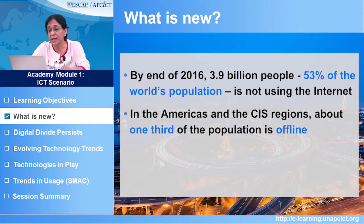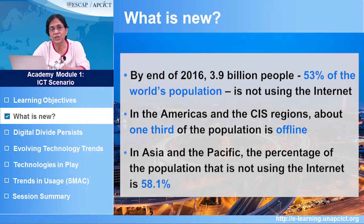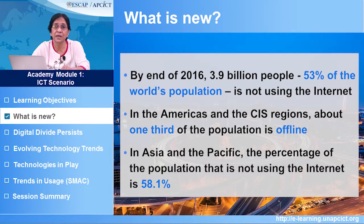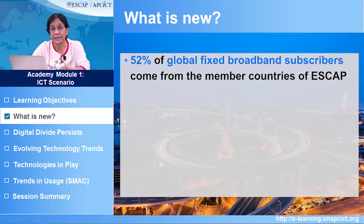In the Americas and the CIS regions, about one third of the population is offline. In Asia and the Pacific, the percentage of the population that is not using the internet is 58.1%, meaning more than half of us are not online. 52% of the global fixed-band subscribers come from the member countries of ESCAP.